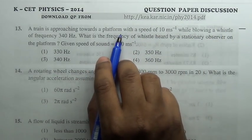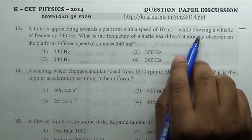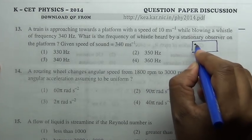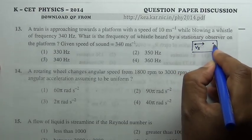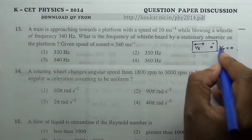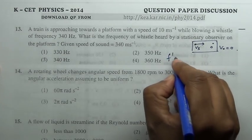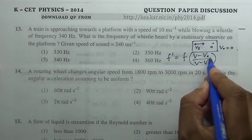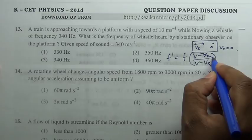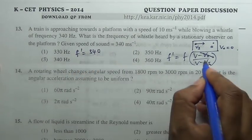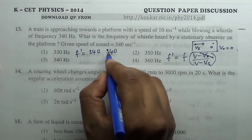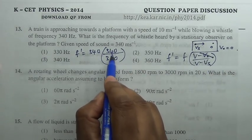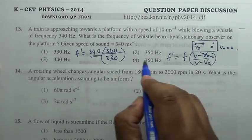A train is approaching towards the platform with a speed of 10 meter per second while blowing the whistle of frequency mentioned. Let us get the equation. This is source velocity of source, this is observer, so velocity of observer equal to zero because observer is stationary. f prime is given by f into v minus v_o by v minus v_s. Observer is at rest, therefore this is zero. f dash equal to 340 by 340 minus 10, which is 330. This ratio is slightly greater than 1, therefore answer should be slightly greater than 340. It is 350.